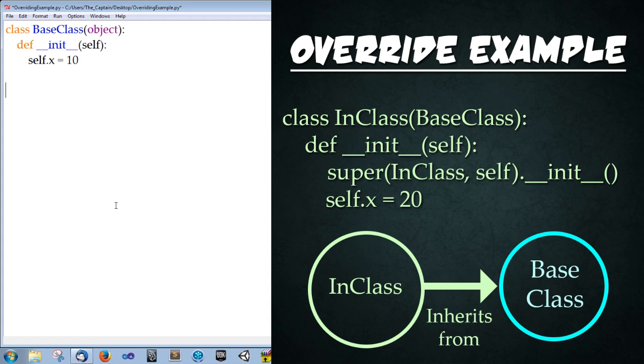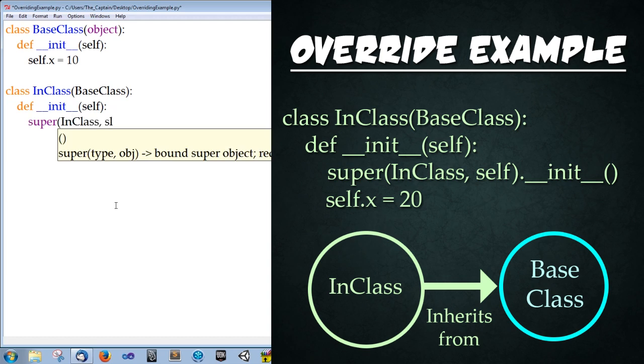Now we're going to create an inheriting class. Type class InClass because I'm lazy, and then BaseClass, the class that we're inheriting from. Then we're going to create its constructor. Def underscore underscore init underscore underscore open parenthesis self close parenthesis colon enter. And then we're going to initialize the base class's init function. Type super, the class we are currently in comma self close parenthesis dot underscore underscore init underscore underscore open close parenthesis. And it's called. So after this function, we're going to type self dot x is equal to 20.